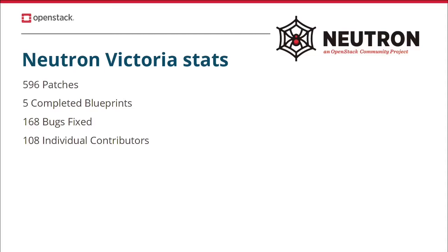Today I wanted to show you some updates about what the Neutron team achieved in the Victoria cycle. Let's start with some general statistics based on Stackalytics. The Neutron team merged almost 600 patches to the Neutron and Neutron Stadium projects during the Victoria cycle. We completed five blueprints, we closed almost 170 bugs, and there were more than 100 individual contributors who sent at least one patch to the Neutron project in this last cycle.